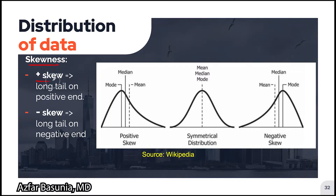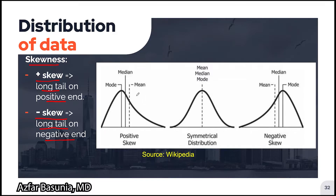A positively skewed graph is one where the long tail points towards the positive end or positive x values. A negatively skewed graph is one where the long tail points towards the negative end or negative x values. The robustness or resistance of central tendencies towards skewness or outliers is measured by how much the central tendency is pulled towards the skewed tail. We can see that the mean is pulled most towards the tail, whereas the mode is pulled the least.